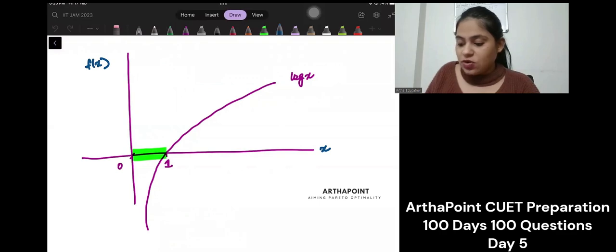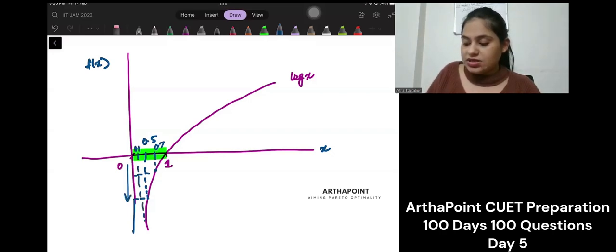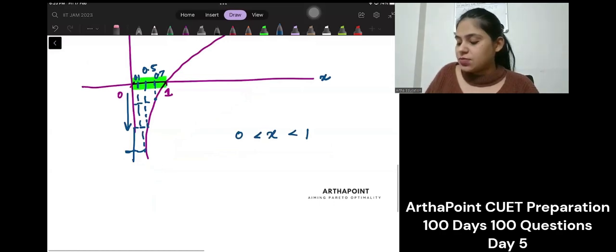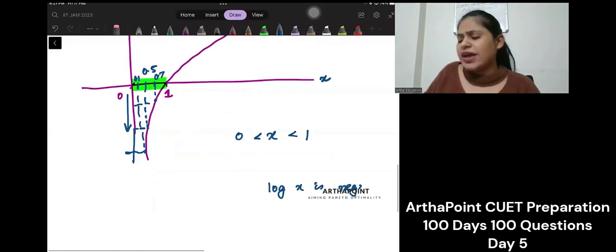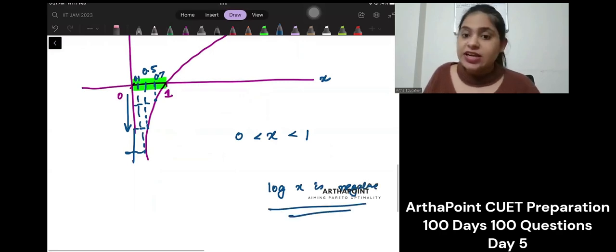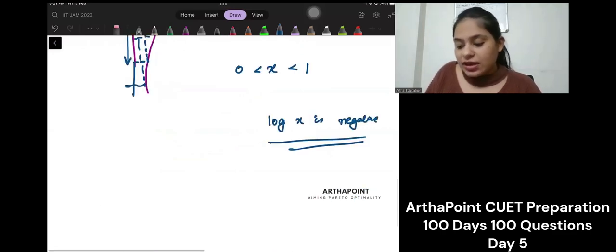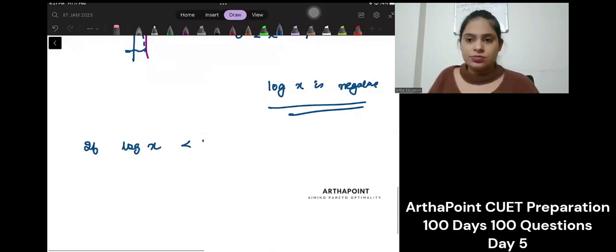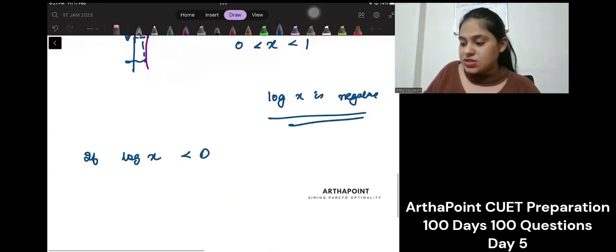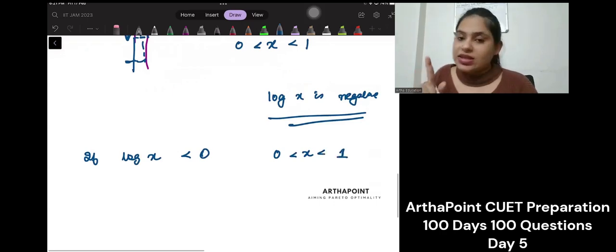So, suppose I take, you know, 0.5 as x's value. It will be negative, right? Take 0.7. It is negative. It is less than 0, right? Take 0.1. It is negative, right? So, when you take the value of x between 0 to 1, log x is negative. It will be negative. So, if log x is less than 0, we have proved this, that when x is between 0 and 1, log x is negative.